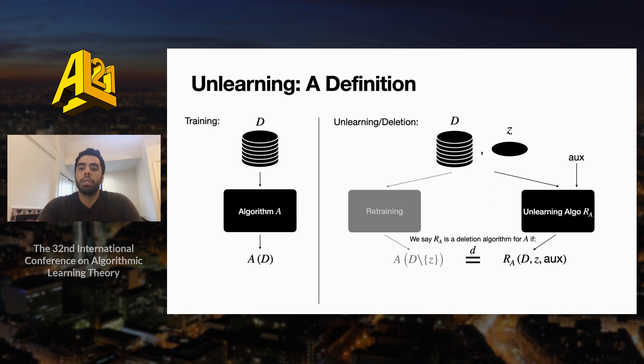Then we say R_A is a deletion algorithm for A if the output distribution of R_A is equal to the output distribution that would have arisen from fully retraining, which is running the training algorithm A on the data set D minus z. And of course, this guarantee must hold for every data set D and every data point z.